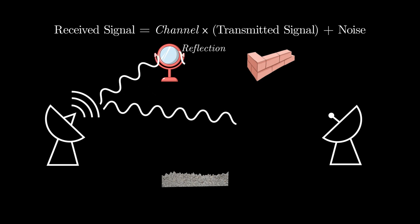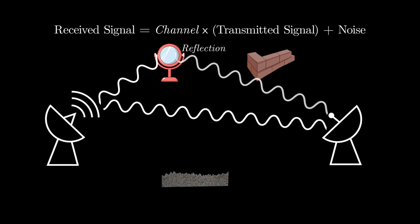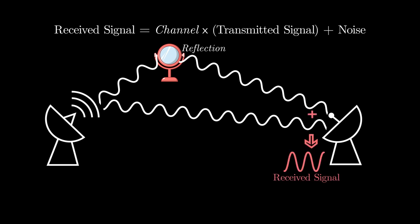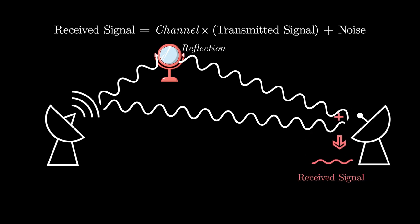Each of these signal propagation paths can face different attenuation and delays. At the receiver, the signals from these multiple paths can get added constructively if they are phase-aligned, or destructively if they are misaligned in phase.